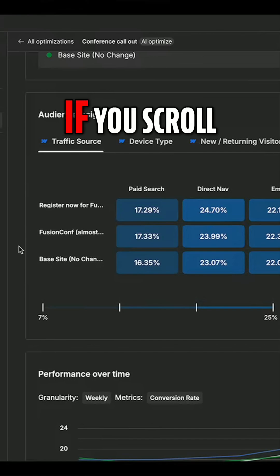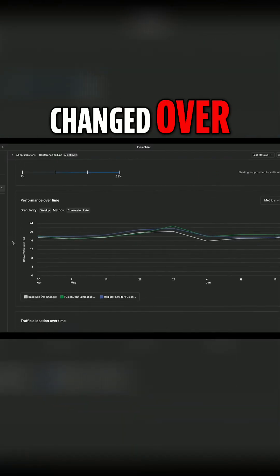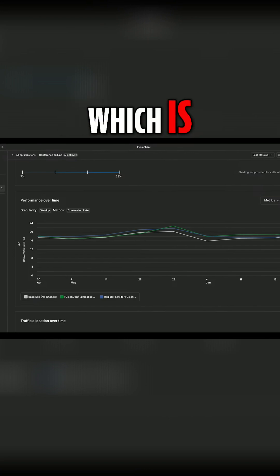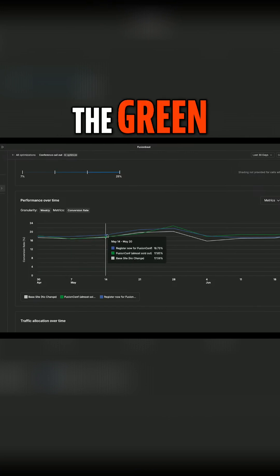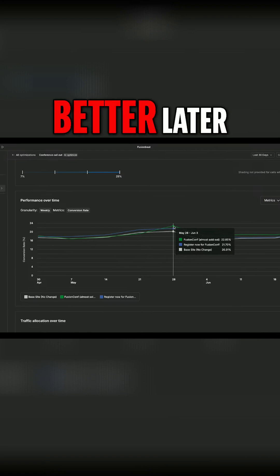Now if you scroll down and look, you can see that performance actually changed over time. The blue line, which is register now, did better earlier on. The green line, which is the almost sold out messaging, performed better later on.